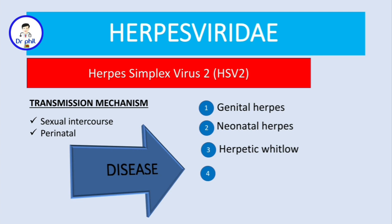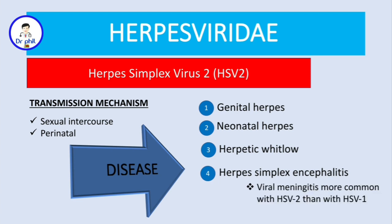For herpetic whitlow with HSV-1, those at risk are mainly dentists. For HSV-2, since it causes disease below the waist in most cases, the occupational risk is for gynecologists. The other condition is herpes simplex encephalitis — specifically viral meningitis — which is mostly caused by HSV-2 more than HSV-1.